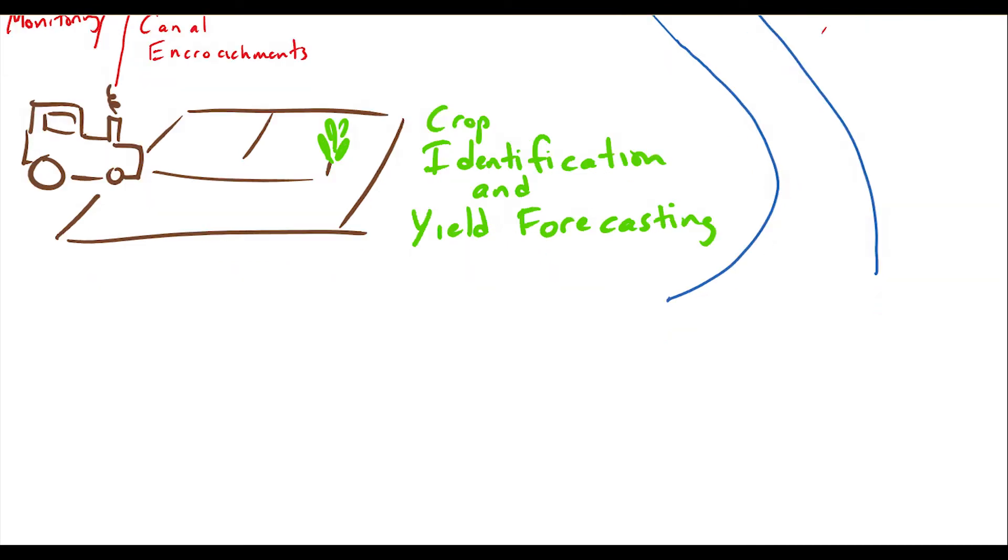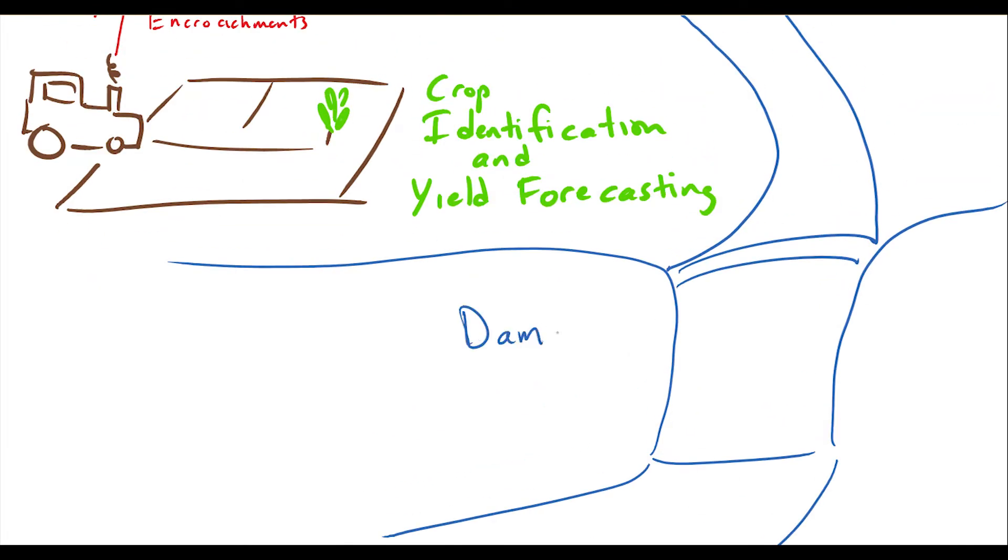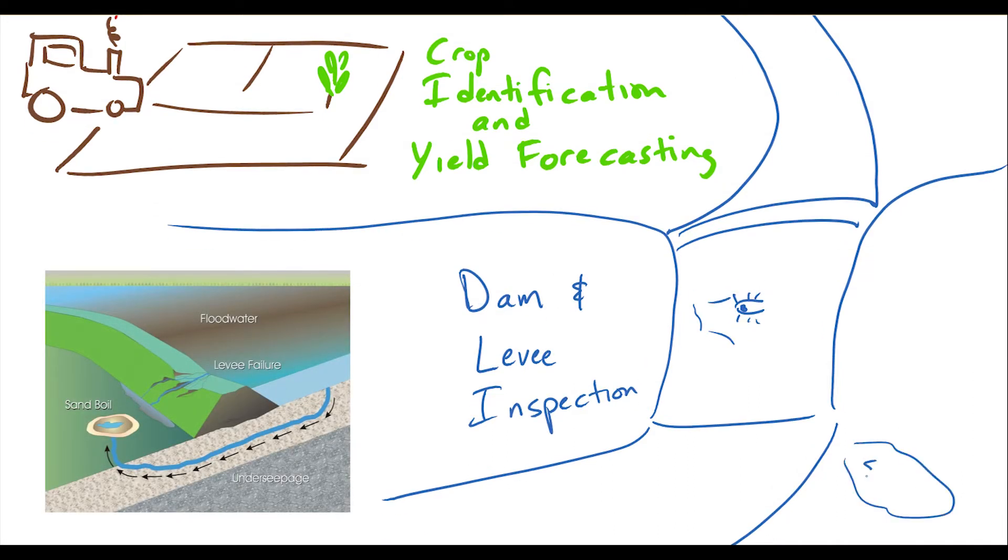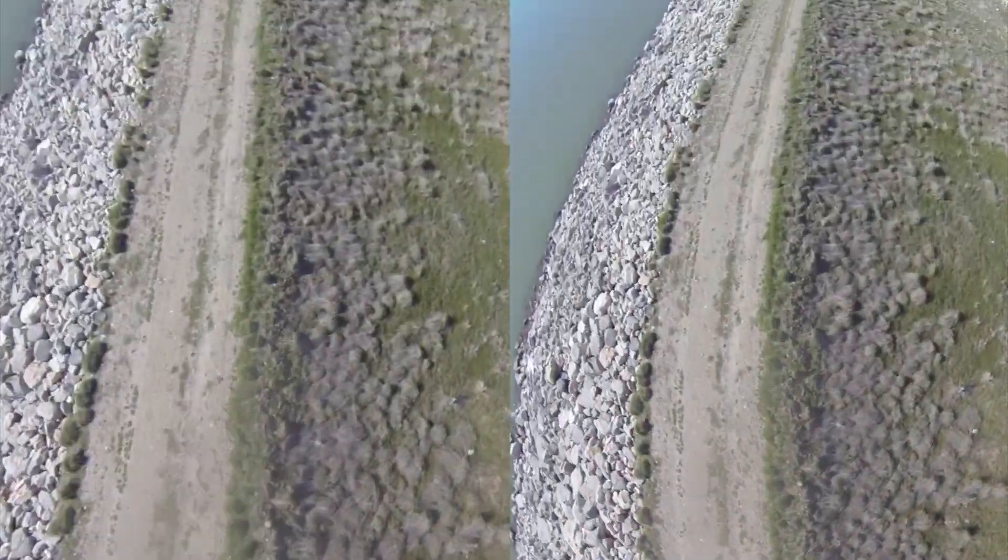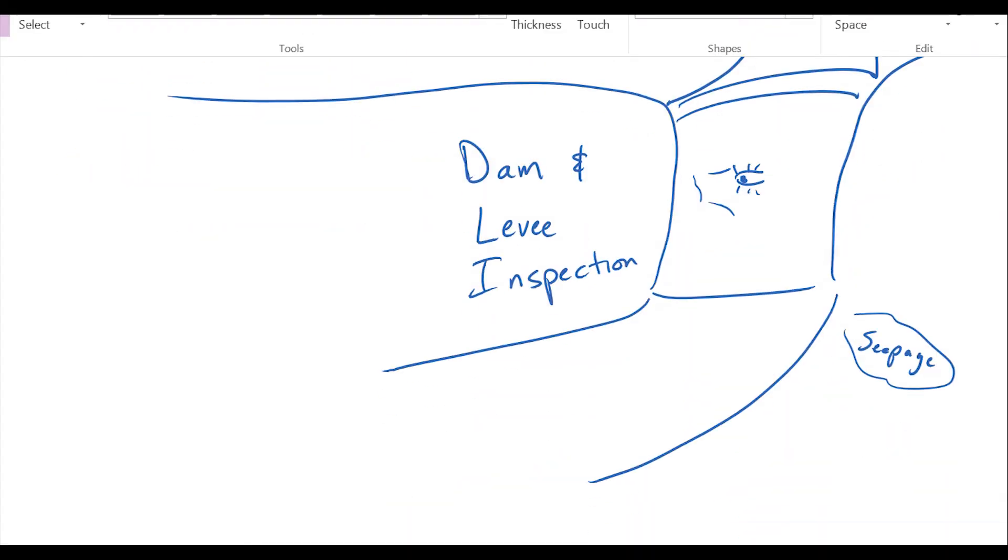The UAV sensors are not only limited to RGB cameras but could include thermal imagers or infrared. One of the areas of application for thermal imaging is in dam levee and inspection, detecting wet spots that shouldn't be there.